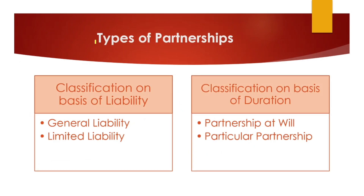Next are the types of partnerships. Classification on the basis of liability: one is general partnership, which means unlimited liability — all partners have unlimited liability for the business's debts and obligations. If a partnership owes money, a creditor can collect from an individual partner, who would be responsible for that portion of the debt. The other type is limited liability partnership, where liability is limited to the capital investment or capital contribution.